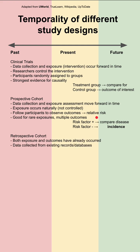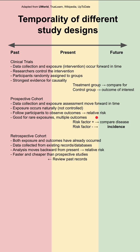Next is the retrospective cohort. In this design, both exposure and outcomes have already occurred, and you're doing data collection from existing records and databases. The analysis moves backwards from the present, and you again calculate a relative risk, just like in the prospective cohort. This is faster and cheaper than prospective studies.